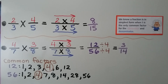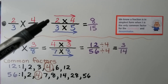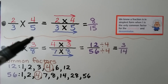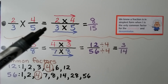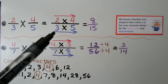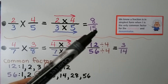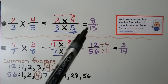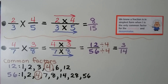Here we have 2 thirds times 4 fifths. We can write it as 2 times 4 over 3 times 5. We multiply 2 times 4, which is 8, and 3 times 5, which is 15, and we get 8 fifteenths. We know the fraction is in its simplest form because 1 is the only common factor for 8 and 15, the numerator and the denominator.